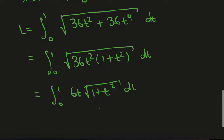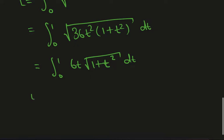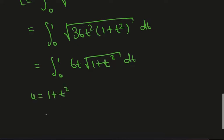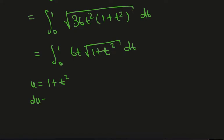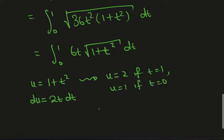Now we can use a substitution to determine this integral, so we can write u as 1 plus t². Then du is 2t dt. The bounds change. If t equals 1, I get u equals 2 if t equals 1, and I get u equals 1 if t equals 0.